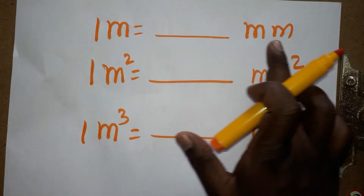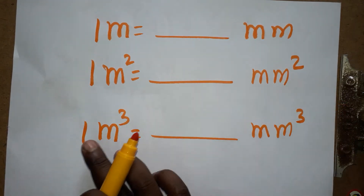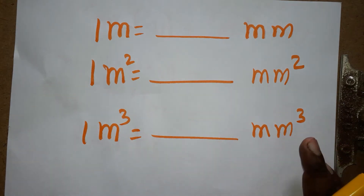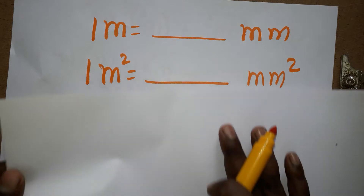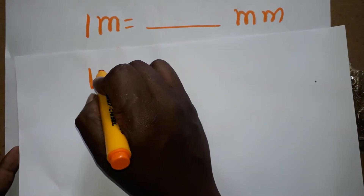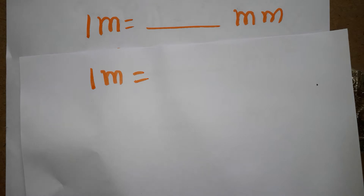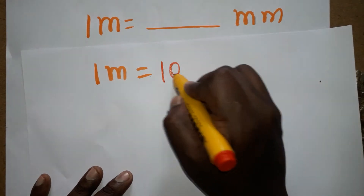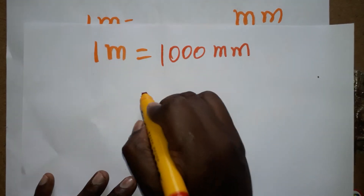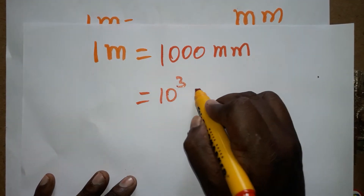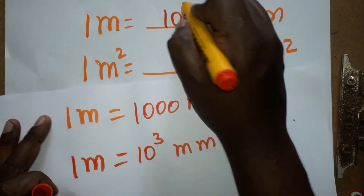Hello students, today we are going to learn: 1 meter is equal to how many millimeters, 1 meter square is equal to how many millimeter square, and 1 meter cube is equal to how many millimeter cube. First, 1 meter is 1000 millimeter — that is three zeros, so 10 power 3 millimeter. Easily we get: 1 meter is 10 power 3 millimeter.